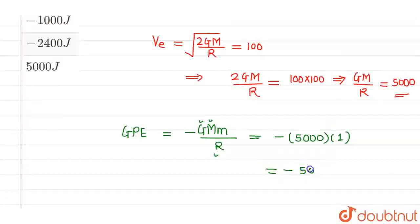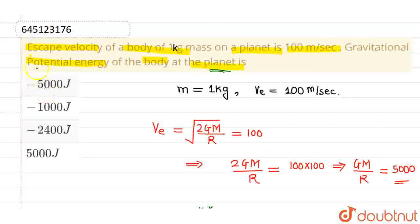So this comes out to be minus 5000, and the unit of gravitational potential energy is joules. So minus 5000 joules is the correct option, which is given in option 1. Option 1 is correct and all other options are incorrect. I hope you understood. Thank you.